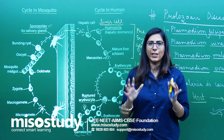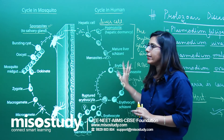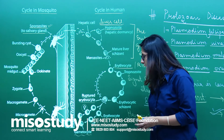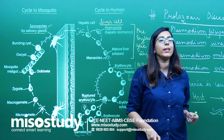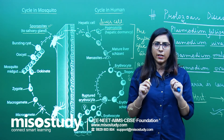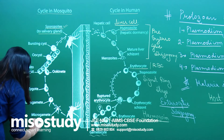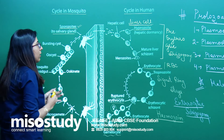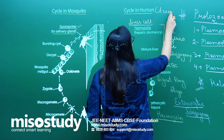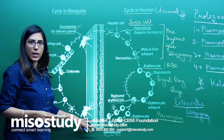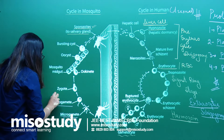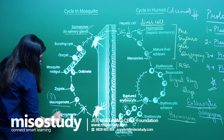Once erythrocytic schizogony is completed and gametocytes are released into the blood, suppose another female Anopheles comes and bites this individual who is already suffering from malaria. The insect sits on the skin and tries to suck blood — these gametocytes will enter into the body of the mosquito. Once these gametocytes enter the mosquito, they go into the digestive system, specifically the mid-gut. The cycle that was occurring in the human was asexual; now it is time for the sexual cycle. These gametocytes grow and form two different types of gametes — a macrogamete acting as the female gamete and a microgamete acting as the male gamete.